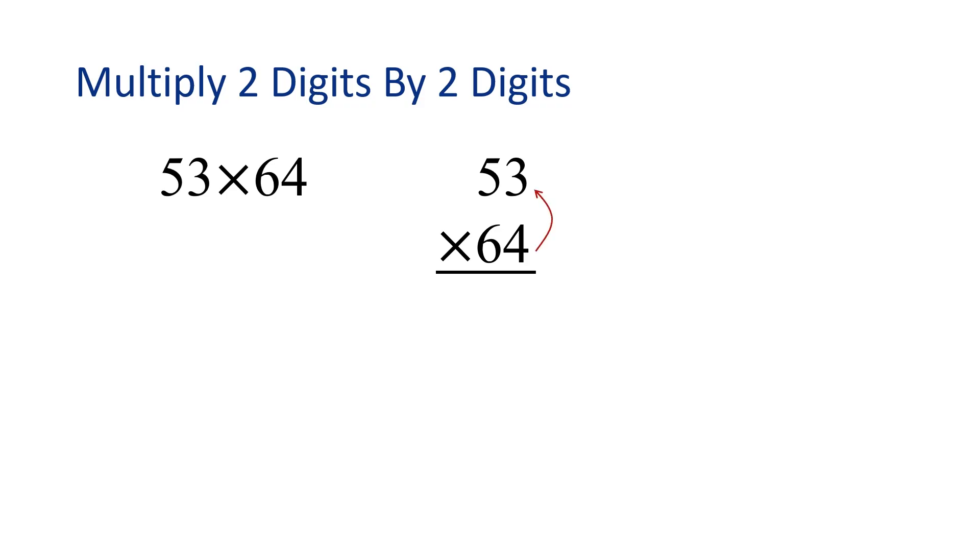4 times 3 is 12. We want to carry the 1. 4 times 5 plus 1. 4 times 5 is 20. 20 plus 1 is 21.